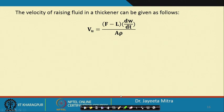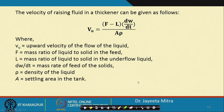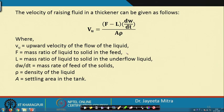The velocity of the rising fluid in a thickener can be given as: V_u = (F − L) × (dW/dt) / (A × ρ), where V_u is the upward velocity of the liquid flow, F is the mass ratio of liquid to solid in the feed, L is the mass ratio of liquid to solid in the underflow liquid, dW/dt is the mass rate of feed of the solid, ρ is the density of the liquid, and A is the settling area in the tank.